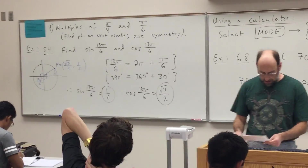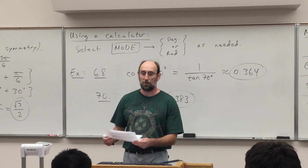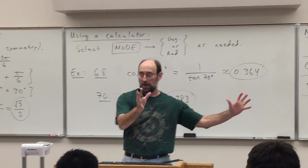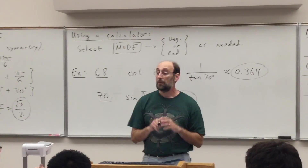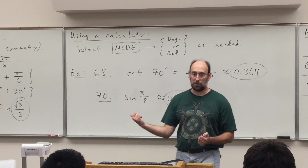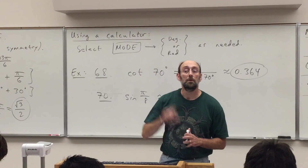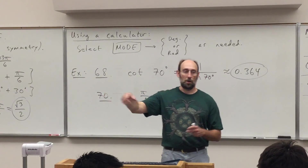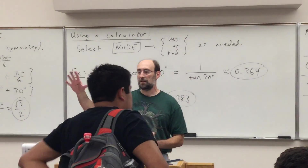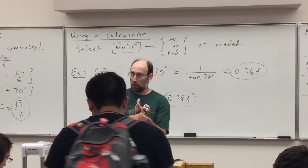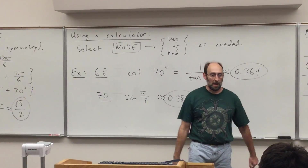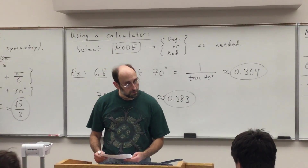We'll stop here and get to the last objective in 6.2 when we reconvene. The quest covers 6.1, 8.1, and 6.2 just up through the quadrantal angles — so pi over 6, pi over 3, all that is not on this quest. The quest will be closed book and closed notes, but you'll be allowed to use a graphic copy of the unit circle handout. The quest will be at the end of the second class hour, so you can ask homework questions at the start and leave early if you finish.